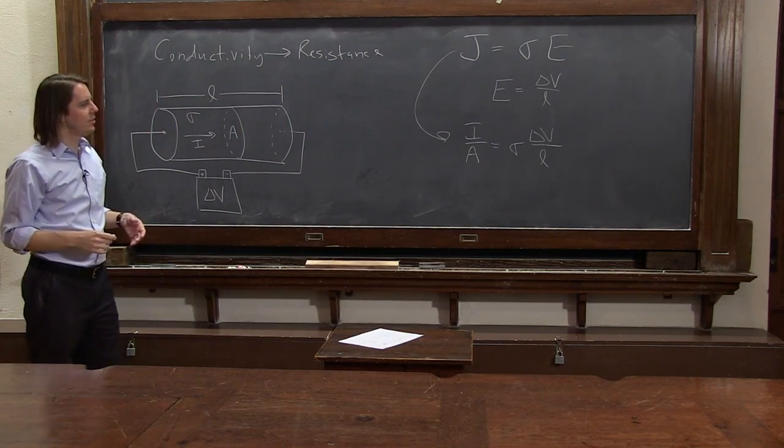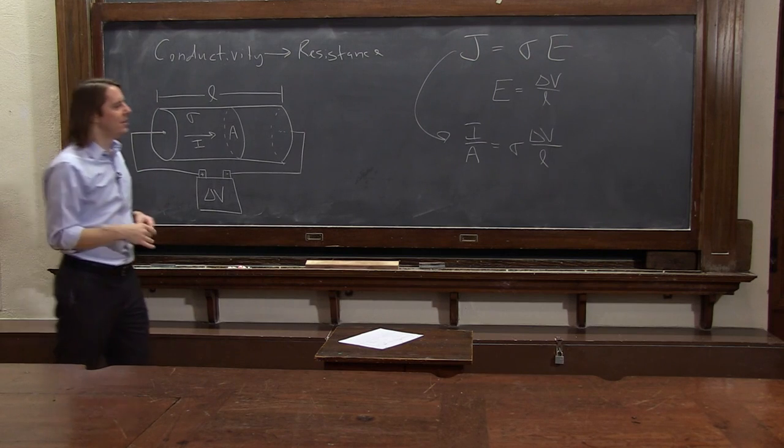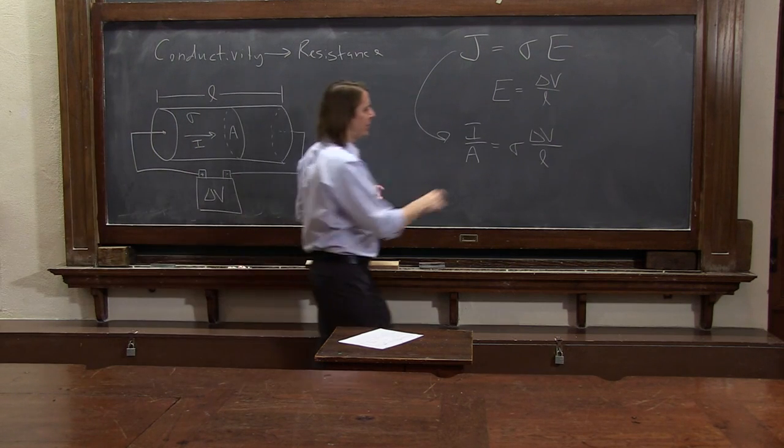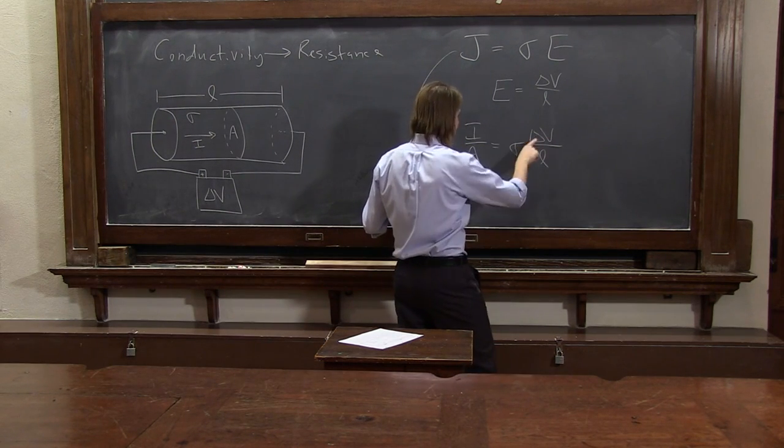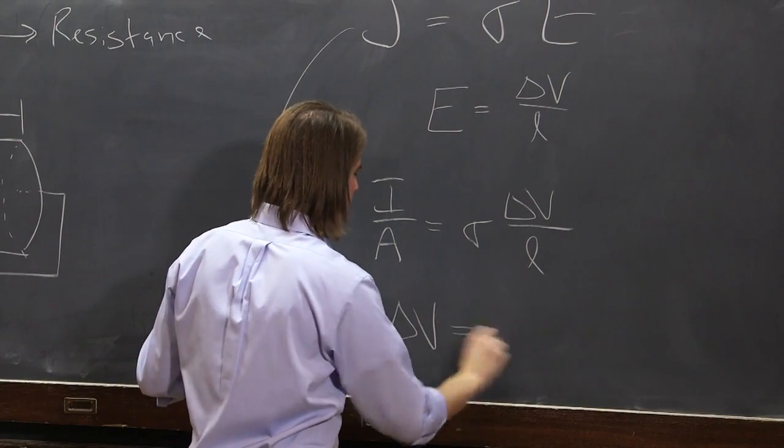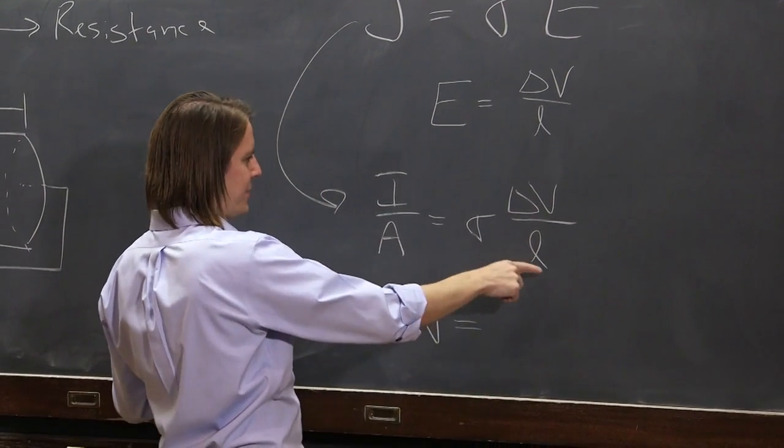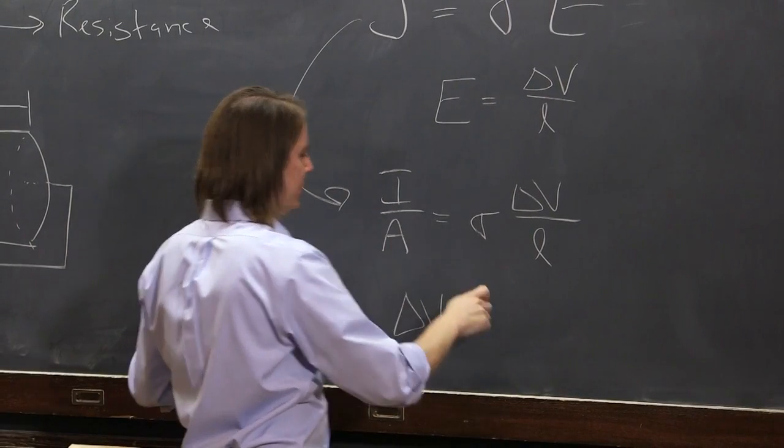And now we have the parts of this that we like. When we're used to thinking of delta V potentials and currents, we just rearrange this, and you get delta V is equal to a bunch of stuff times I. It looks like L over sigma A.